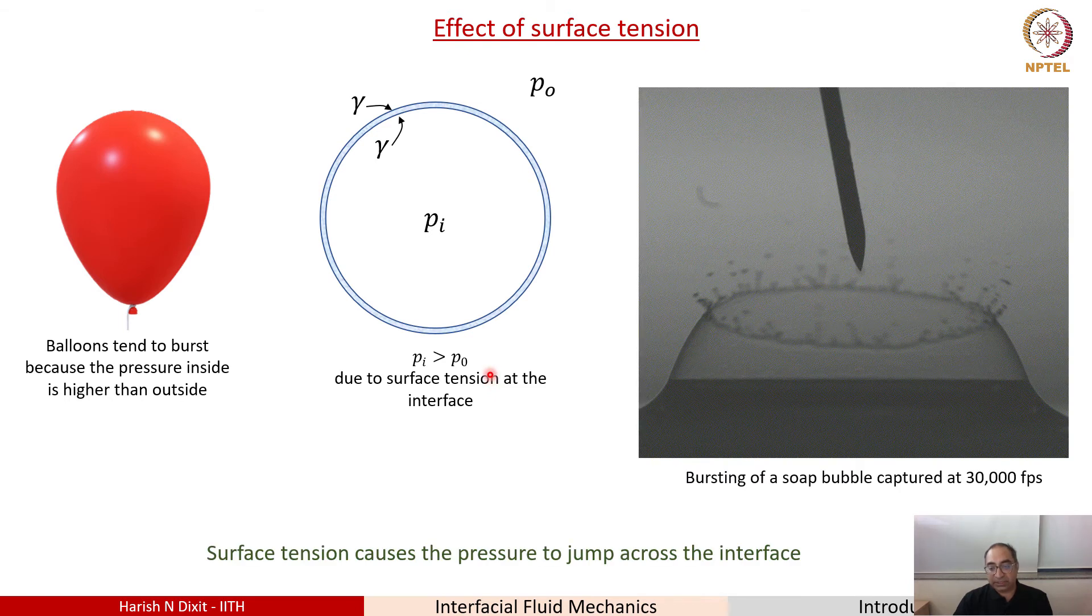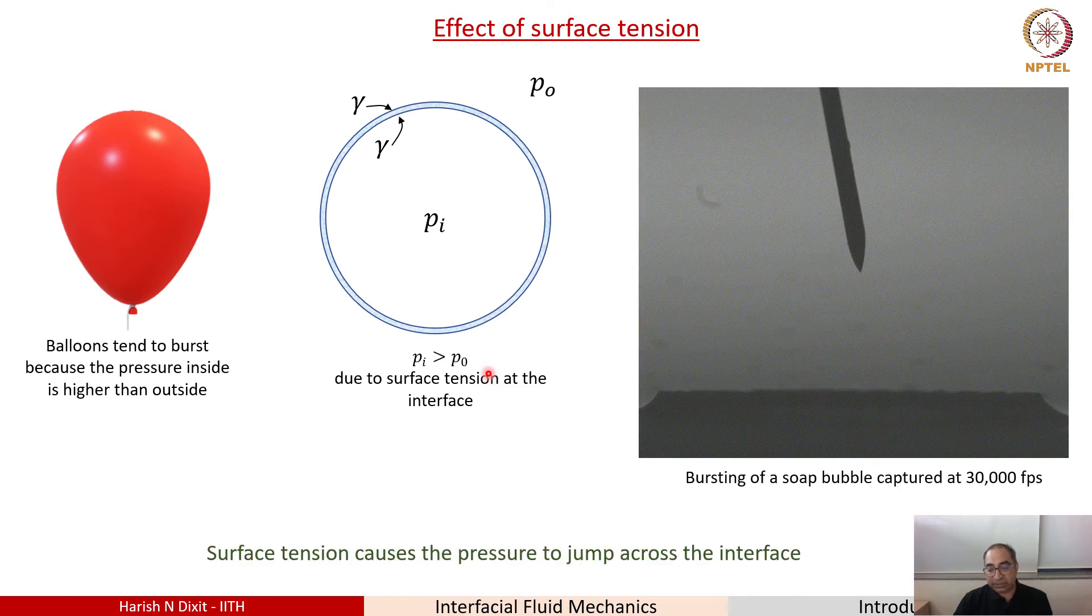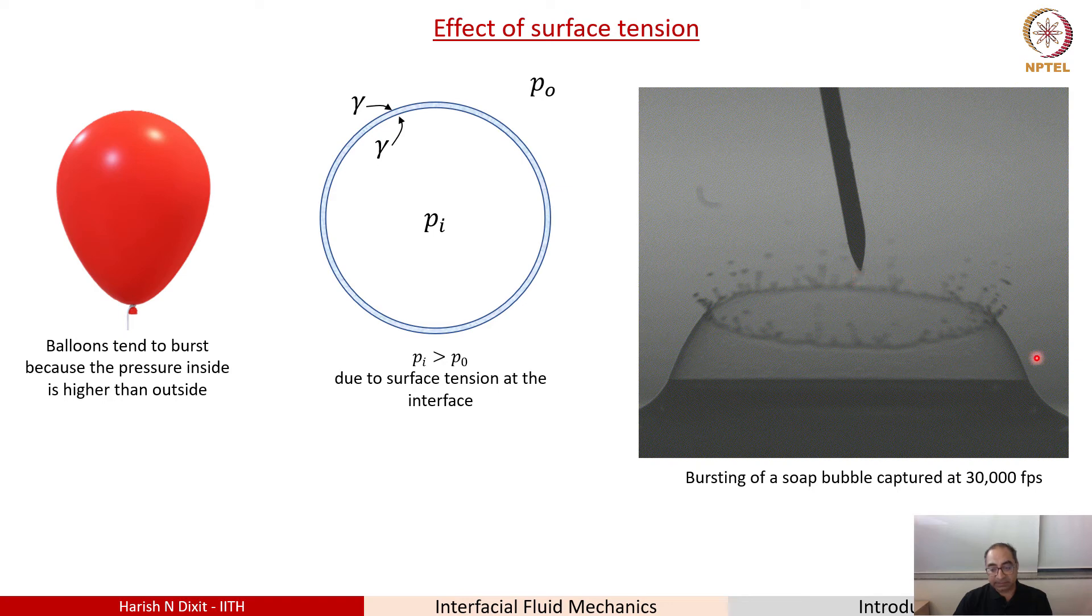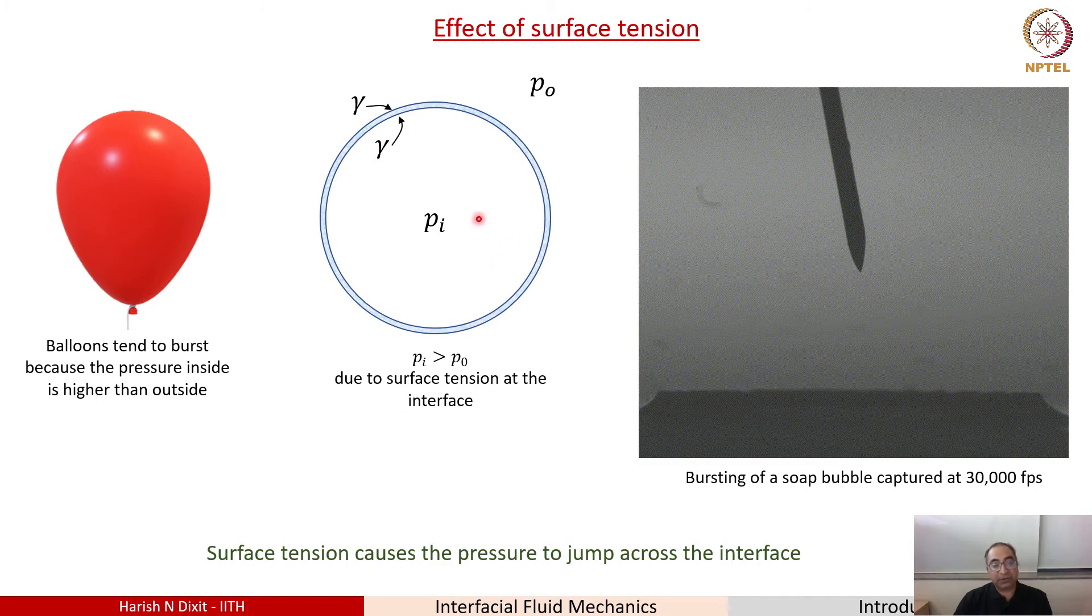Now the pressure inside is higher than pressure outside again due to surface tension at the interface. Now this can also be seen when you look at the case of a soap bubble that is bursting. Surface tension causes a pressure jump across the interface and therefore, in other words, the pressure on both sides of the interface can be different.